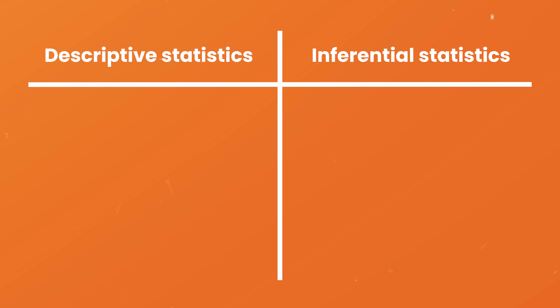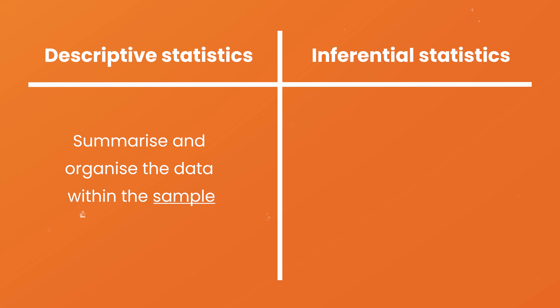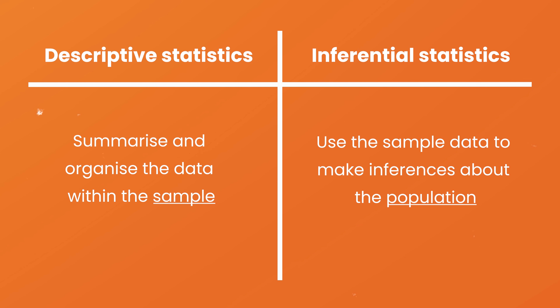How is this all different from descriptive statistics? At the simplest level, descriptive statistics summarize and organize the data that you already have — in other words, your sample. Inferentials, on the other hand, allow you to use your sample data to assess whether the patterns contained within it are likely to be present in the broader population, and potentially to make predictions about that population. Let's look at an example to make this a little more tangible.